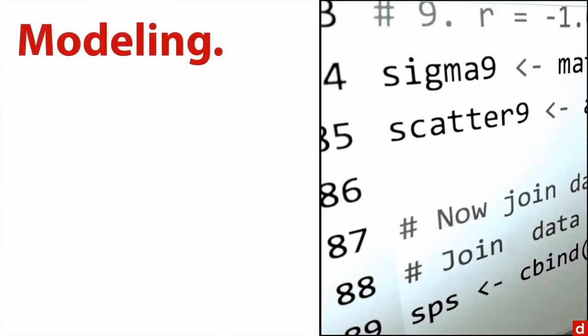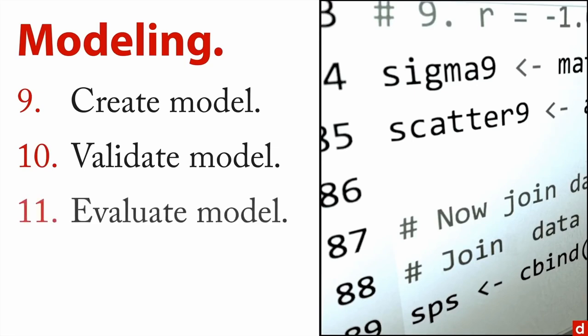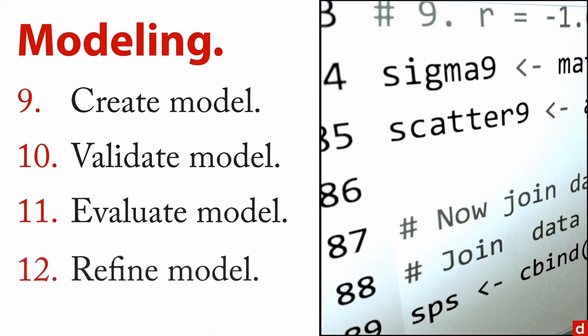The third group is statistical modeling — where you actually create the statistical model. You might do a regression analysis or a neural network. Once you create the model, you have to validate it — perhaps with a holdout validation or a small replication. You also need to evaluate the model: once you know it's accurate, what does it actually mean and how much does it tell you? Then refine it: throw out variables, add others, transform data, and make it easier to interpret and apply.